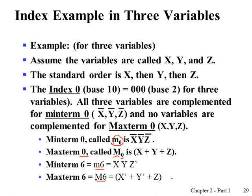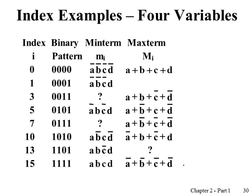Remember how we define the index. In minterms, true form is considered as 1 and complemented form is 0, so binary pattern 1, 1, 0 is decimal 6. In maxterms, complemented form is considered as 1 and true form as 0, so combining those bit patterns, binary 1, 1, 0 is also 6, but with reverse variable interpretation. Here is the example of indices in four variables A, B, C, D — given the bit pattern, you can determine which variable is true or complemented in either the minterm or maxterm case.